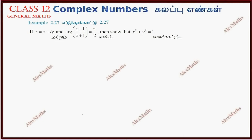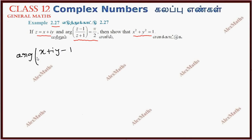Hi students, this is Alex here. Example 2.27. Z equals x plus iy. Given that the argument of (x plus iy minus 1) divided by (x plus iy plus 1) is equal to pi by 2, show that x squared plus y squared is equal to 1.